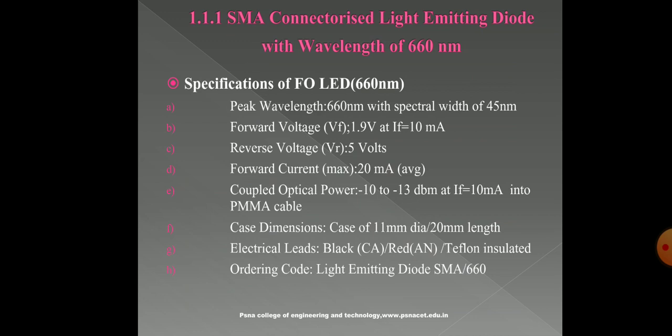This is our SMA-connectorized light emitting diode with wavelength 660nm. The specification of FOLED 660nm is displayed in this slide. It is characterized by parameters such as peak wavelength, forward voltage, reverse voltage, forward current, coupled optical power, dimensions, electrical leads, and ordering code.